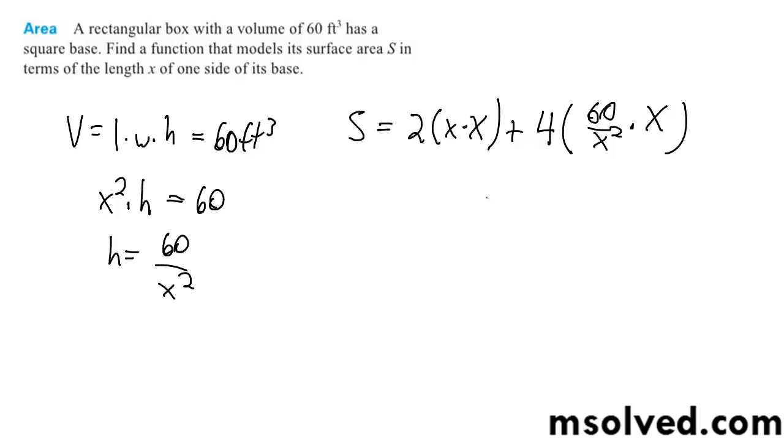Alright, so we've got 2x squared plus 60 times 4, so 240 over x, and that's it.